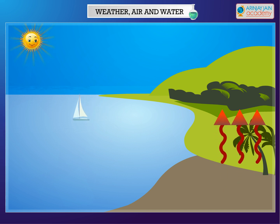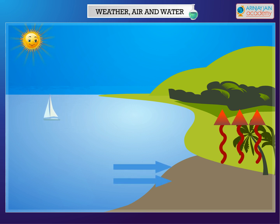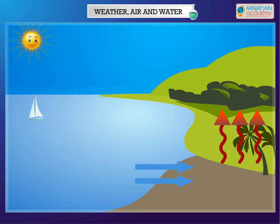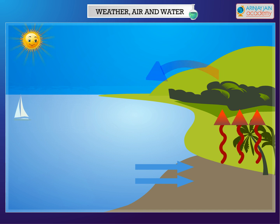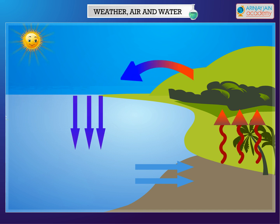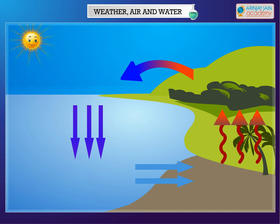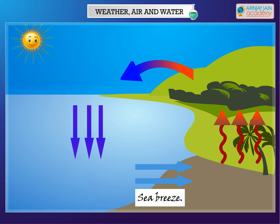The air over the land becomes hotter and rises up. The cooler air from the sea rushes in towards the land to take its place. The warm air from the land moves towards the sea to complete the cycle. The air from the sea is called the sea breeze.